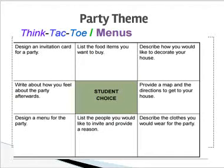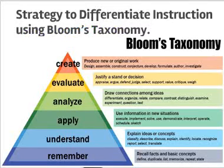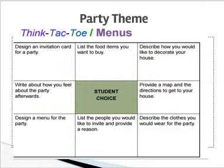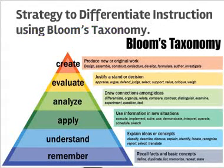All activities follow Bloom's Taxonomy strategies according to level of readiness. At the Remember level, students are just writing a list. At Understand, they are explaining ideas and concepts. At Apply, they use information in a new situation. At Analyze, they draw connections among ideas. At Evaluate, they justify a stance or decision. At Create, they produce new or original work. For example, 'List the food items you want to buy' corresponds to Bloom's Remember level, since students have to recall and list.